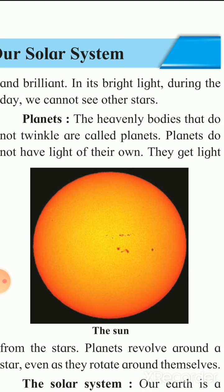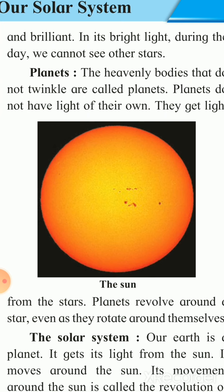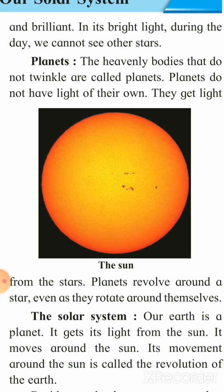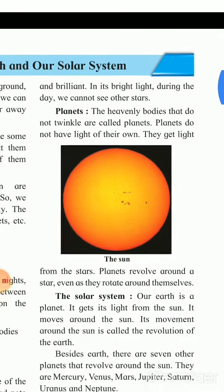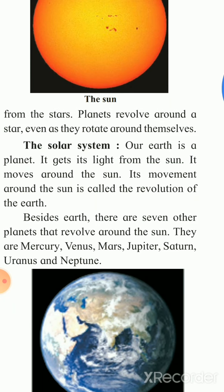The planets do not have light of their own. They get their light from the stars. The planets revolve around stars and also rotate around themselves. We have studied the planets, the stars, and our solar system. Now, our Earth is also a planet. It gets its light from the sun.